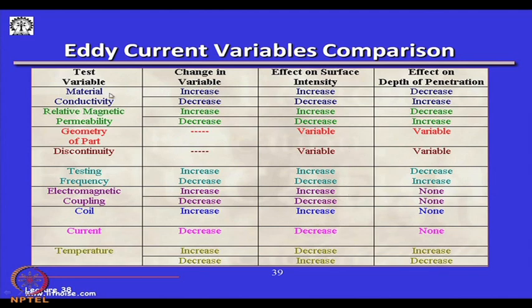For example, if material conductivity increases, it will have an increase in surface intensity or a decrease in depth of penetration. This kind of table helps one understand what to do to ensure good signal-to-noise ratio and good measurements — it is a handy table for ready reference.